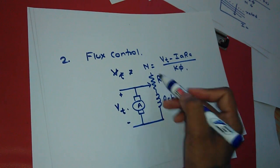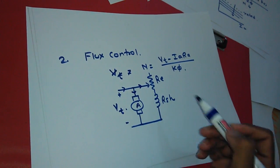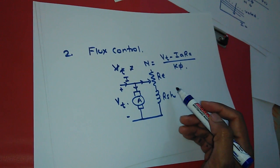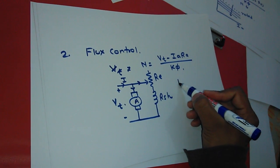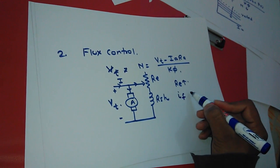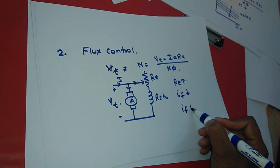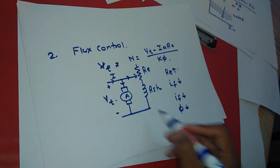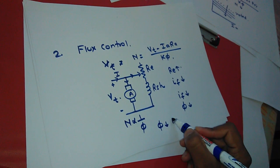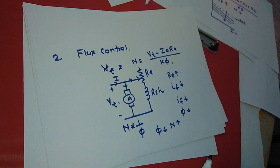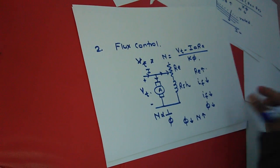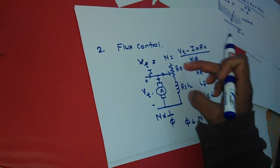In a shunt motor, by changing the resistance of the field circuit we can decrease or increase the current. As we increase the external resistance Re in the circuit, the current in the field winding will decrease. As If decreases, flux also decreases, and from this relation we can see N is inversely proportional to φ. So as φ decreases, speed will increase, and from this method we can get speed above the rated speed. It is called constant power control because the armature part is constant and only the field part is changed.